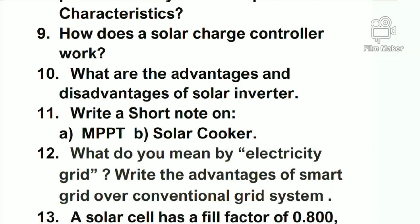Write a short note on MPPT. MPPT means Maximum Power Point Tracker. This tracking system is used in solar panels so that we can collect solar radiation by keeping the solar panels directed toward the sun all day. The next question involves a short note on solar cooker — we have to describe how solar radiation is collected in a solar cooker.